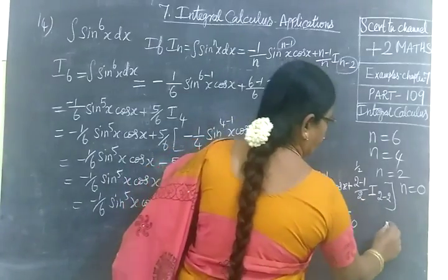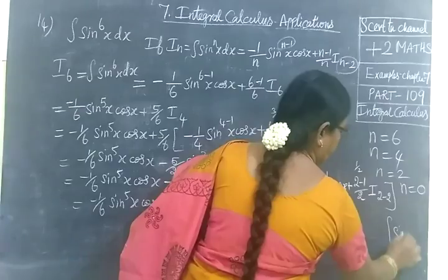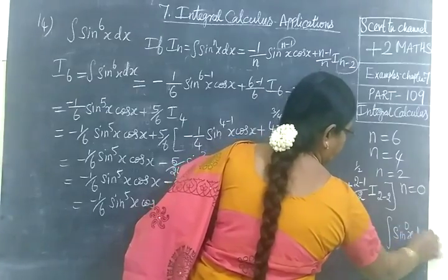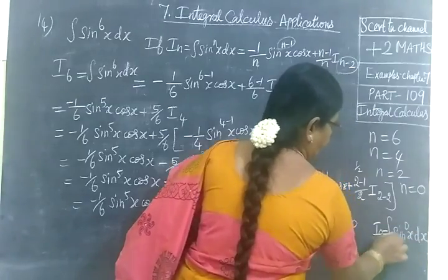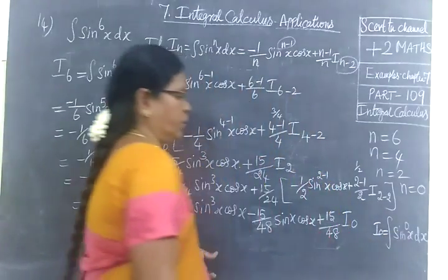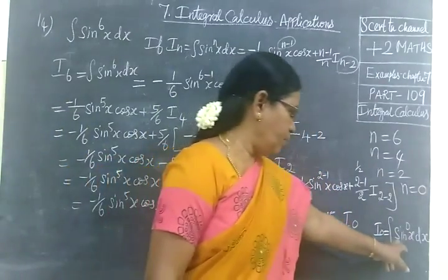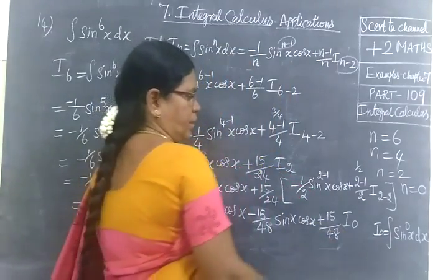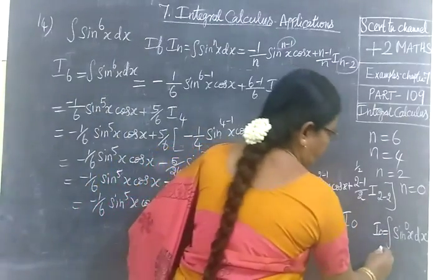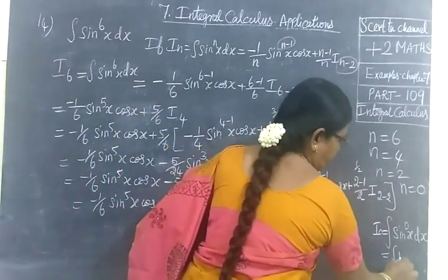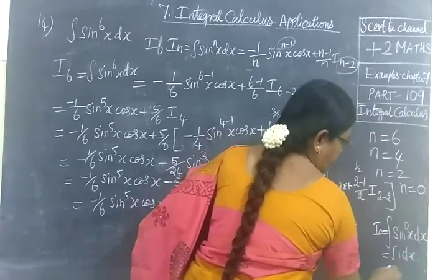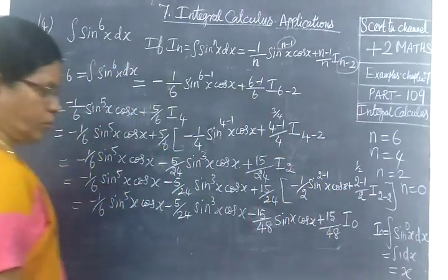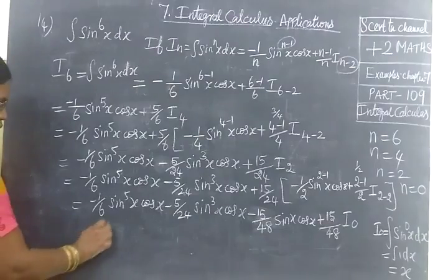Now I₀ is the integral of sin power 0x dx, which is just the integral of 1 dx. So I₀ equals x. Writing out the next full step with all terms combined.